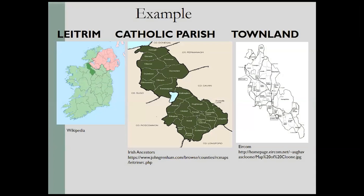Here's an example using Antrim — that dark green area up near Ulster. You'll see the county, then in the center the Catholic parishes, and on the right the townlands. Some of those townlands cross county boundary lines, because the shape of the townland area does not always match the county. So if I'm looking for my ancestor in this county and I know the Catholic parish, I'm going to have to go a further division and look for which specific townland I need to search for records.